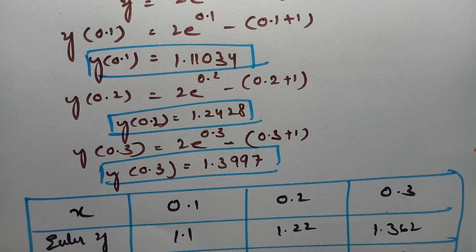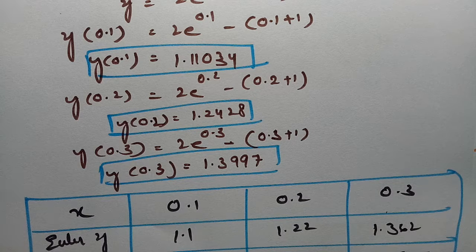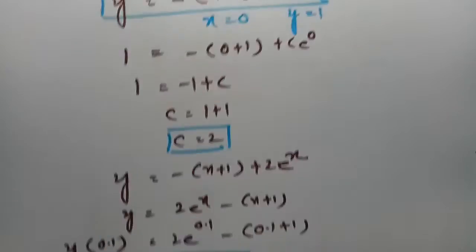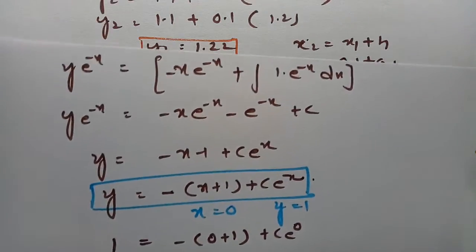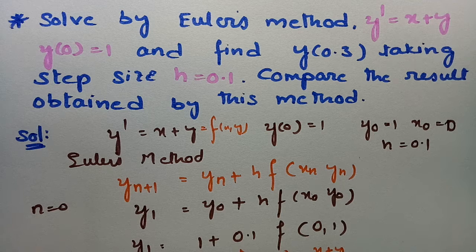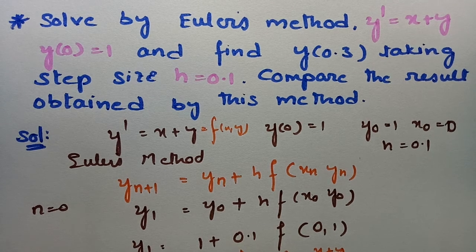The values of y deviate from the exact value as x increases. In order to improve this, in the next chapter we are going to discuss the modified Euler's method to get more accurate values. Thank you very much for watching. If you like this video, raise your thumb, leave a comment, and share it with your friends.